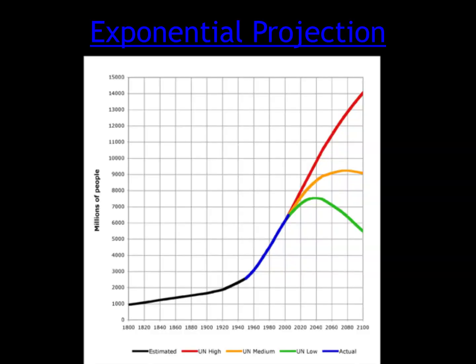This figure illustrates estimated human population growth. In black we can see an estimated historical population, and in blue the actual population for the last several decades. We also see the predicted population into the future: the red represents the United Nations high prediction, yellow is the medium prediction, and green represents the lowest possible prediction.